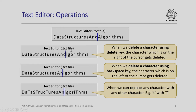When we delete a character using the delete key, the character on the right of the cursor gets deleted. For example, if there was a character 'A', pressing the delete key will make capital A disappear. If we delete a character using the backspace key, then the character to the left of the cursor gets deleted — so 'D' gets deleted. We can also replace any one character by any other alternate character.